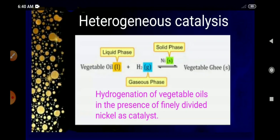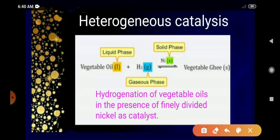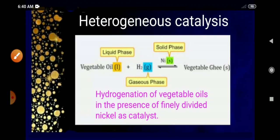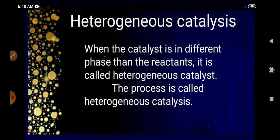Another example is the hydrogenation of vegetable oil in the presence of finely divided nickel, which acts as a catalyst. Here, oil is in the liquid state, hydrogen is in the gaseous state, and nickel — the catalyst — is in the solid state. All these are in different phases. The word 'hetero' means different, so since the phases of the catalyst and reactants are different, it is called heterogeneous catalysis.